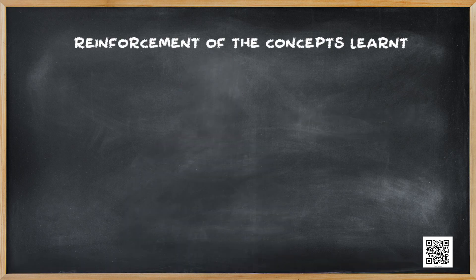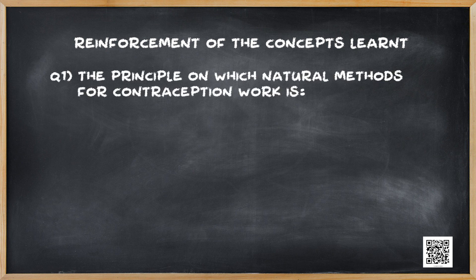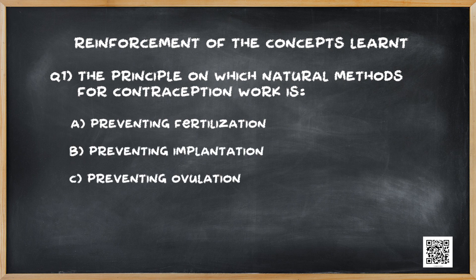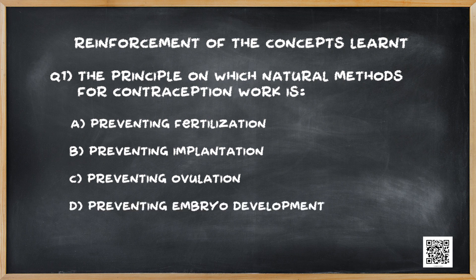Let us now do a quick reinforcement of the concepts learned. Question 1: The principle on which natural methods of contraception work is — A. Preventing fertilization, B. Preventing implantation, C. Preventing ovulation, or D. Preventing embryo development. The answer is A — Preventing fertilization.